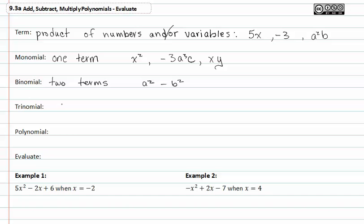A trinomial has three terms. An example of three terms would be ax² + bx + c. Notice that there are plus or minus signs in between each term.